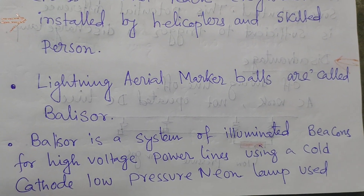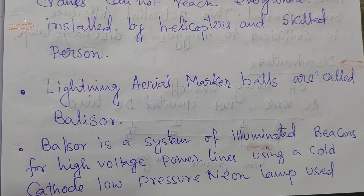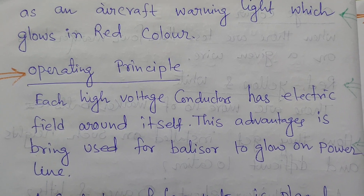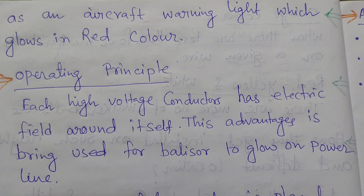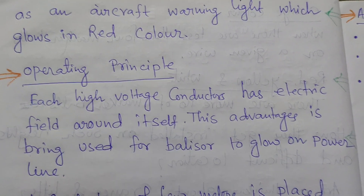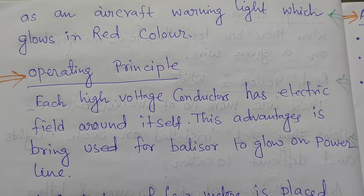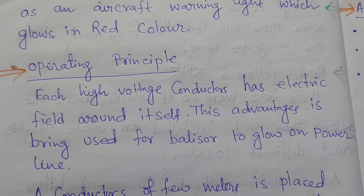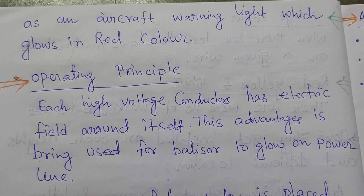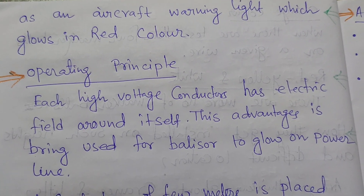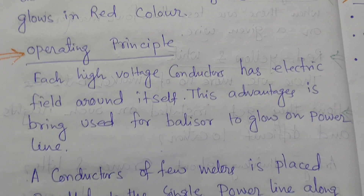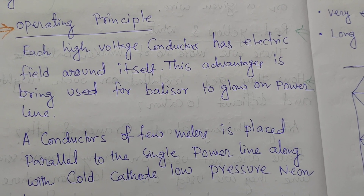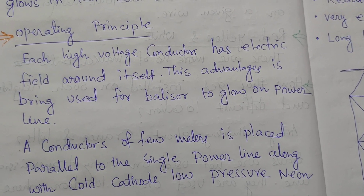The belisher is a system of illuminated beacons for high voltage power lines, using a cold cathode low pressure neon lamp as an aircraft warning light, which glows red in color. The wavelength of red color is very high, so everybody can see red color faster. Red color is used for this belisher's light purpose — it is a neon discharge lamp.